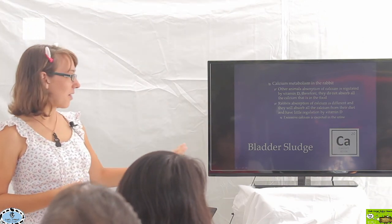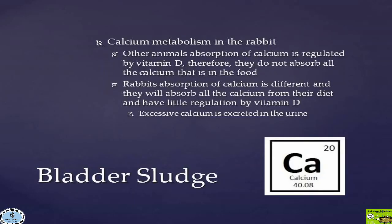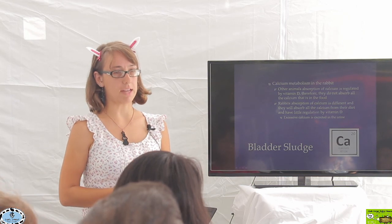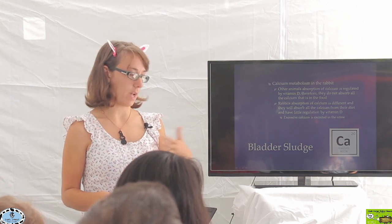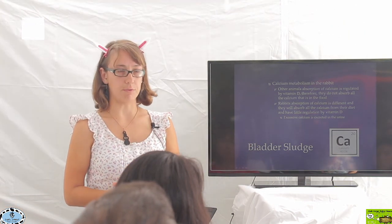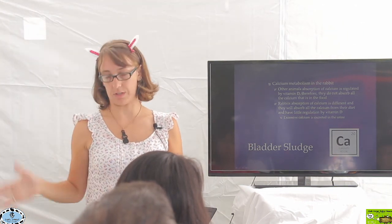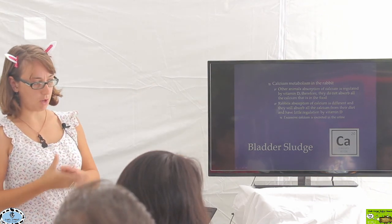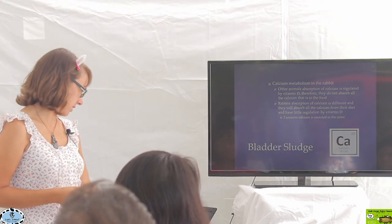To reiterate, the reason we look at excess calcium in the diet as a top cause of bladder sludge is the unique way rabbits absorb calcium. Other animals need vitamin D to adequately absorb calcium; rabbits don't. They absorb all the calcium they take in and must excrete it through their bladder. Too much calcium intake means too much ends up in the bladder.